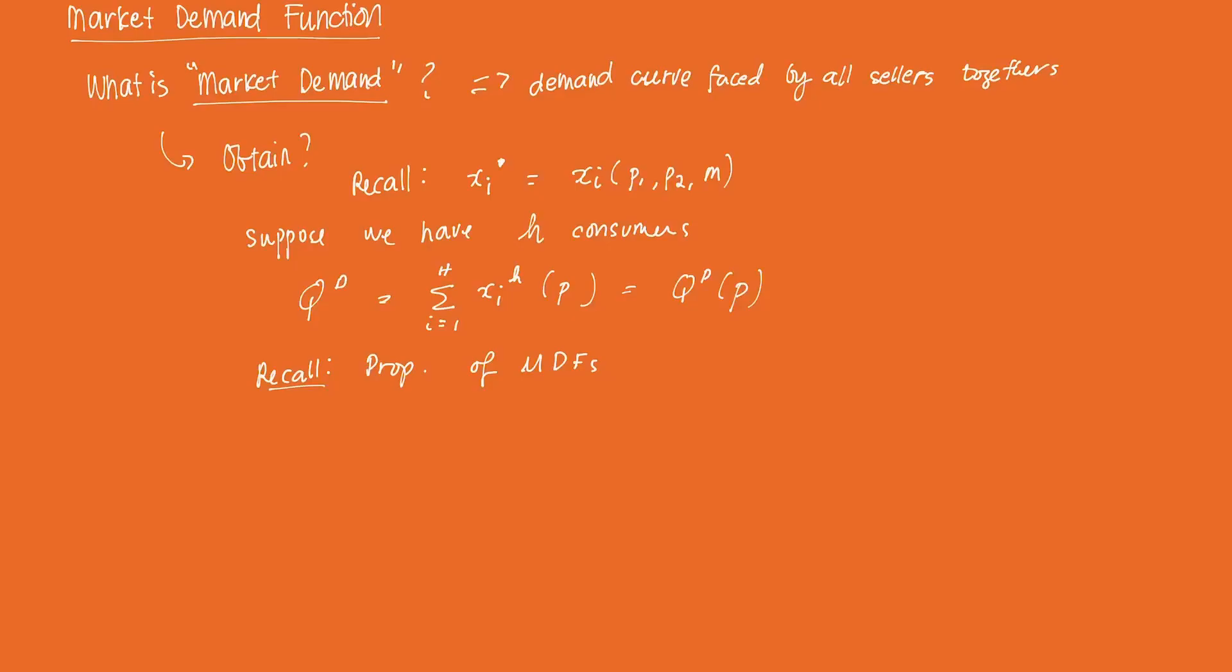And the first property is that if you note that in a Marshallian demand function, if you derive it with respect to P, it is less than zero, which gives rise to our law of demand, which suggests that a consumer will demand less of a good if its price increases. And it also translates to how the market demand function works.